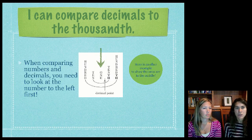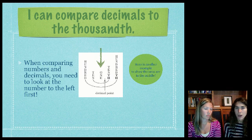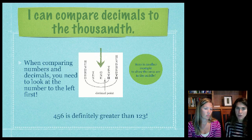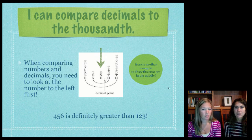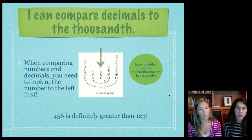Now one thing to think about when you're comparing numbers and decimals is you need to look at the number to the left first. When you're comparing two numbers, you always want to look at your numbers to the left first. For example, we have 456 definitely greater than 123 because in our hundreds place value, a four is definitely larger than a one.